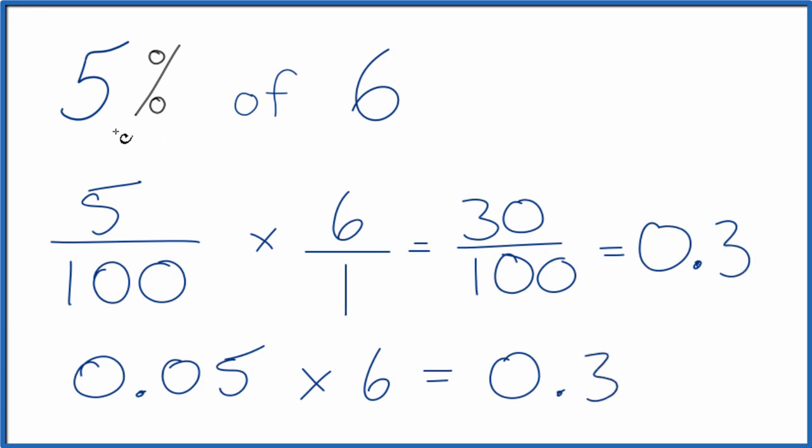So in answer to our question, 5% of 6 is 0.3. You could also call it 0.30.